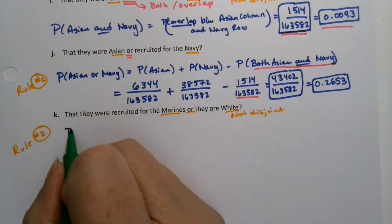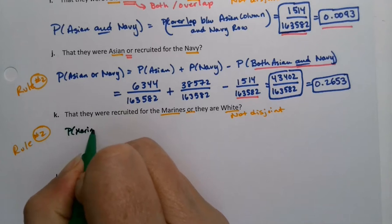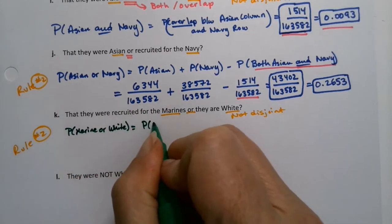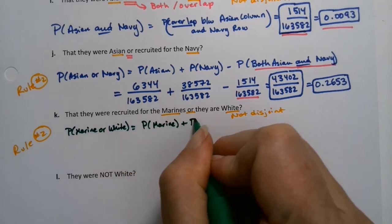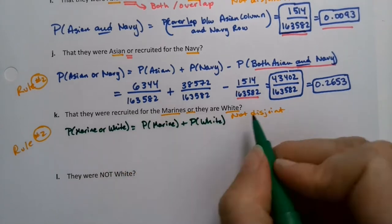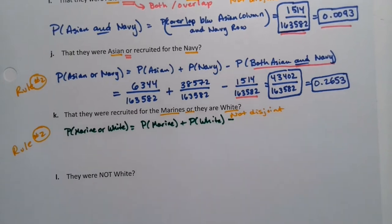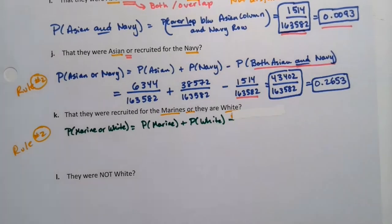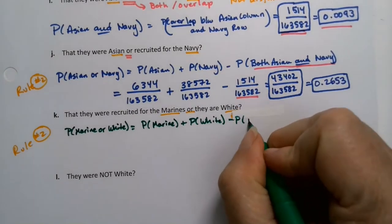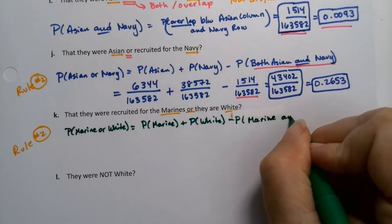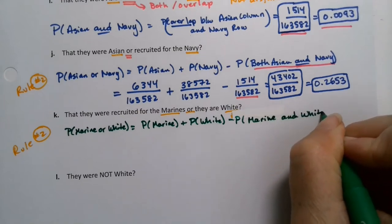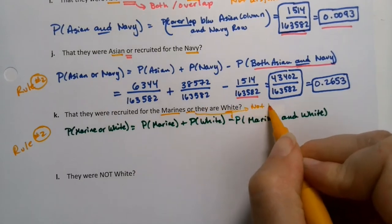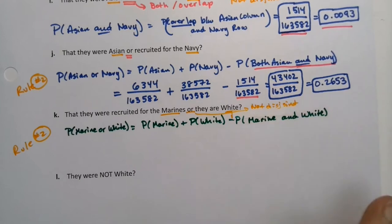So we're going to have to add and subtract just like we did on the previous one. I'm actually just going to switch color to make things a little easier for ourselves. So rule number two again. So we want the probability of Marine or white is the probability of Marine plus the probability of white. And if you think, well, I didn't know they were not disjoint, it's okay. You can still do it this way. And when in doubt, go with rule number two and you'll be fine. So I'm going to rewrite that minus the probability of Marine and white.